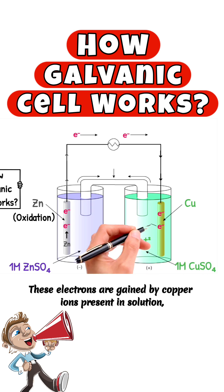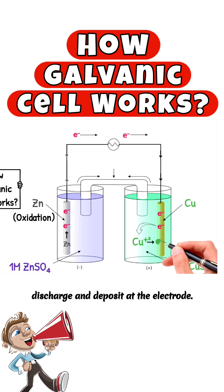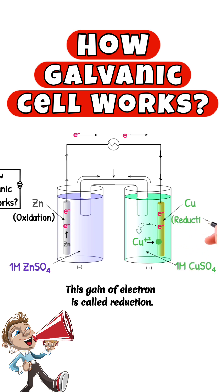These electrons are gained by copper ions present in solution, discharged and deposited at the electrode. This gain of electrons is called reduction.